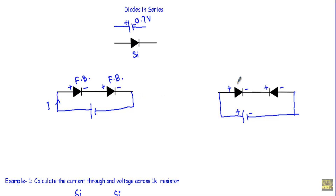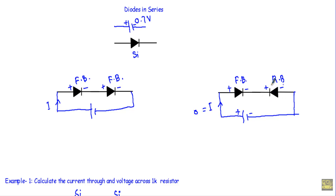Now look at this circuit — this diode will be in forward bias but this diode will be in reverse bias. So it is not possible to get any current, because when a diode is in reverse bias we replace it with an open circuit, and in an open circuit there is no current flow.